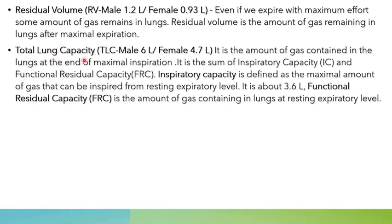The next parameter is total lung capacity. It is the amount of gas contained in the lungs at the end of maximal inspiration. It is the sum of inspiratory capacity and functional residual capacity. Inspiratory capacity is defined as the maximal amount of gas that can be inspired from a resting respiratory level — that is, one normal breath out followed by maximum effort breathing in.